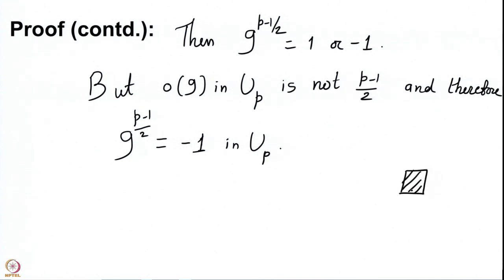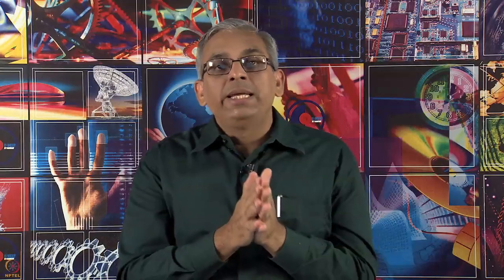So, to recall: the Legendre symbol can be computed very easily simply by taking the (P−1)/2 power of your natural number A and reducing modulo the prime P. We will see more such things which will help us compute Legendre symbols in the coming lectures. See you until then. Thank you.